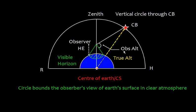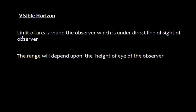Next is the observed altitude. This angle can be defined as the angle between the visible horizon and the line joining the observer's eye level and a celestial body. This is the limit of the area around the observer which is under direct line of sight. The range of visible horizon will depend upon the height of the observer — as the height of eye increases, the range will also increase.